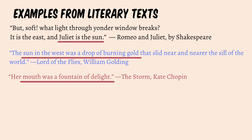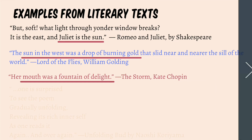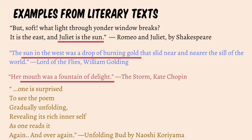Now let's move on to poetry. From 'Unfolding Bud' by Naoshi Koriyama: 'One is surprised to see the poem gradually unfolding, revealing its rich inner self as one reads it again and again.' Here the poet is comparing a poem with a bud. The comparison is implicit — the poet does not directly say the poem is a bud, but talks about it slowly unfolding and revealing its rich inner self, just like a tender bud.